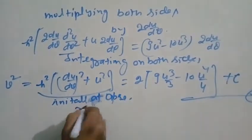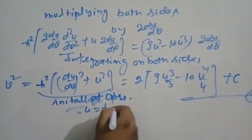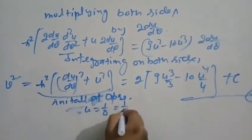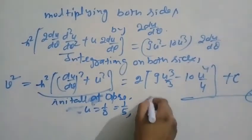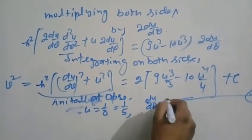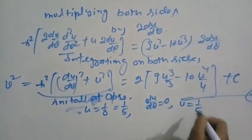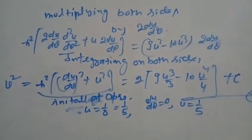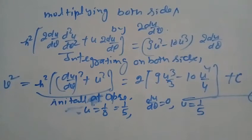Applying initial conditions: at the apse, u equal to 1/r equal to 1/5 (since r equals 5), and du/dθ equal to 0. We put these values into equation number 1.